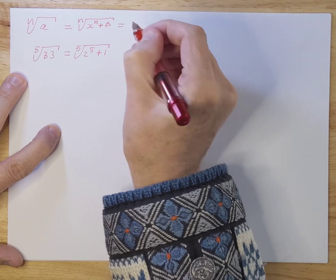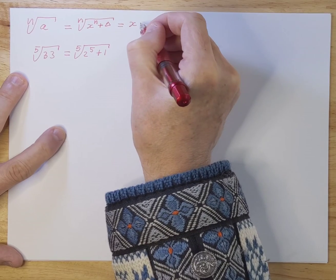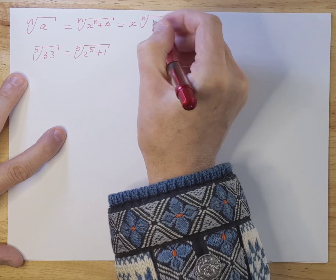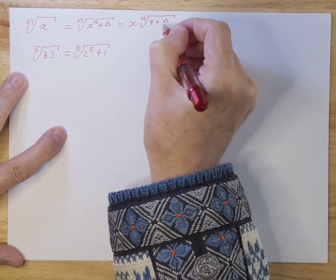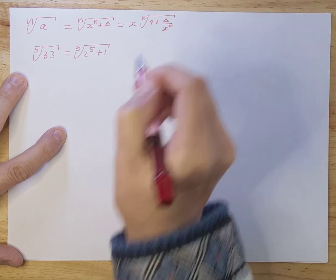So if you work that out a little bit more you can take x out and you get the nth square root of 1 plus delta over x to the n.